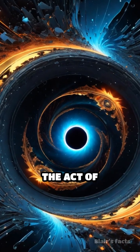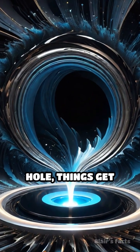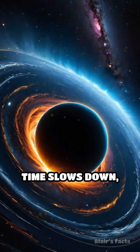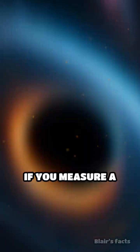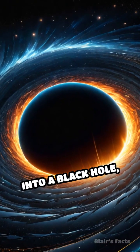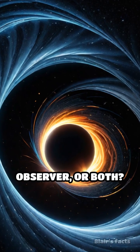In ordinary labs, the act of observing collapses a particle's wave function. But near a black hole, things get wild. Time slows down, and the observer's reality diverges from what a distant astronomer sees. If you measure a particle falling into a black hole, does the wave function collapse for you, for an outside observer, or both?